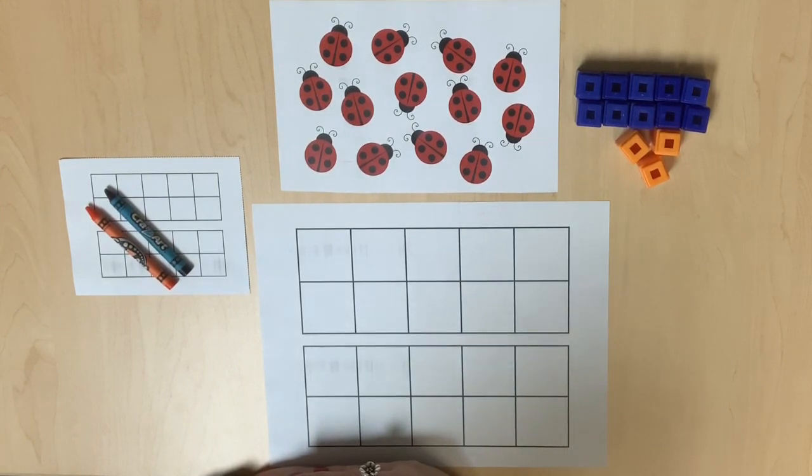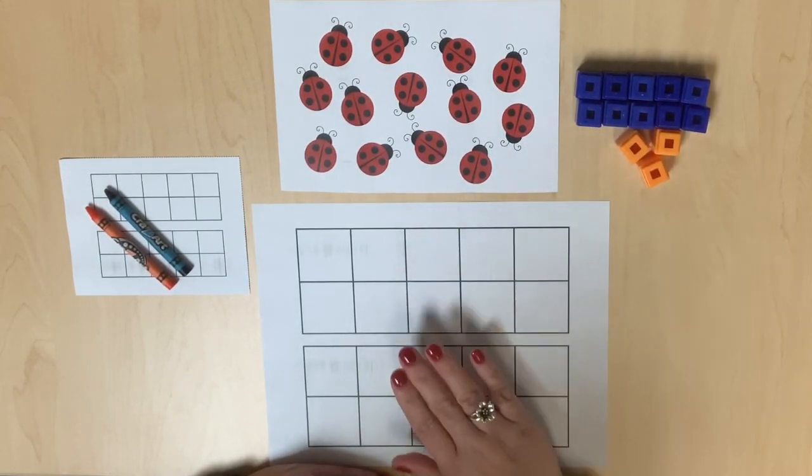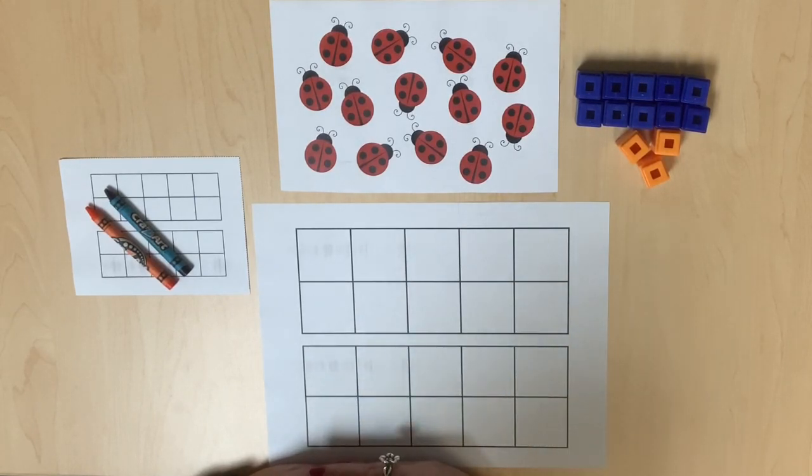Students will count and represent the numbers 11, 12, 13, 14, and 15 using linking cubes, pictorial representations, and double ten frames. This is the beginning of students understanding these values are composed of a 10 and some more.